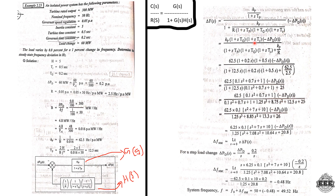We solve by taking LCM and simplifying step by step. Substituting all values — Kp, Tg, Tt — into the transfer function. After cancellation, the denominator becomes 6.25 times the bracket term.